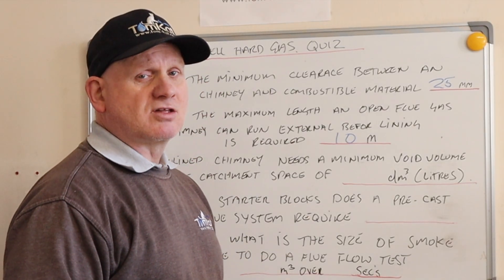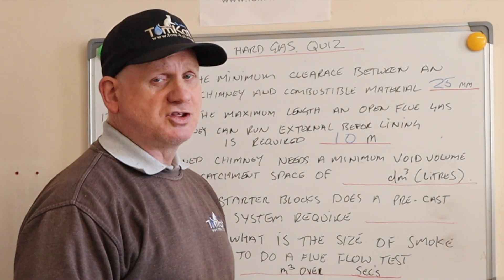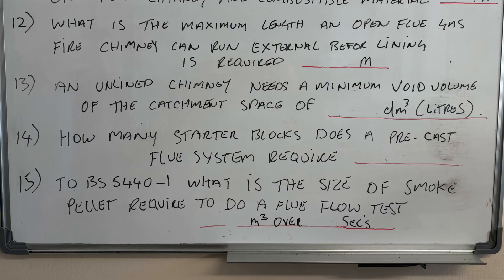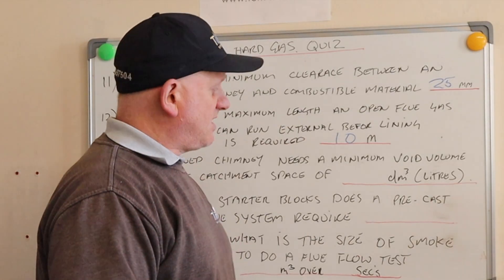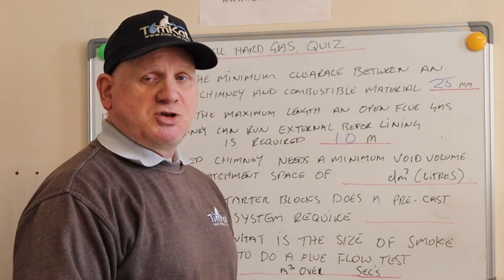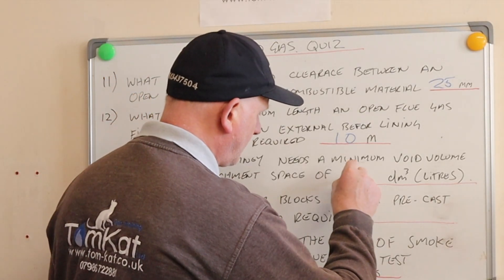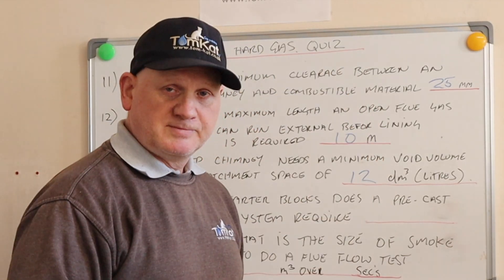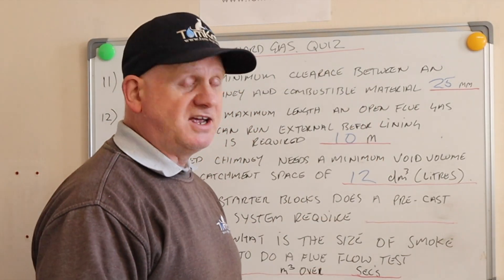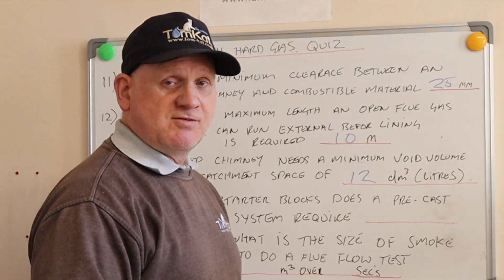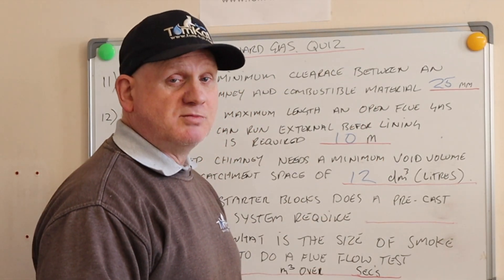Question number thirteen: an unlined chimney needs a maximum void volume of the catchment space of how many decimeters cubed or liters? If you said twelve, you'd be correct.